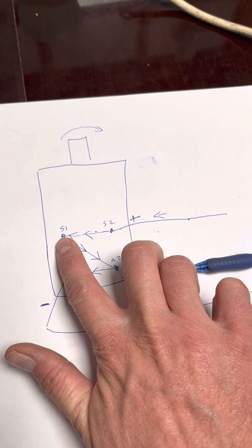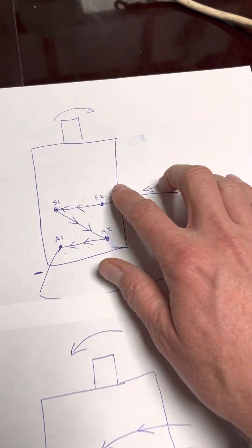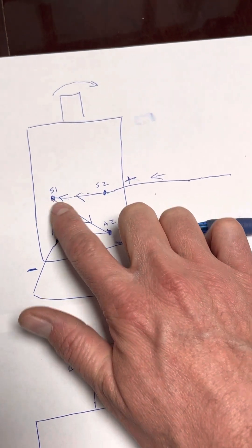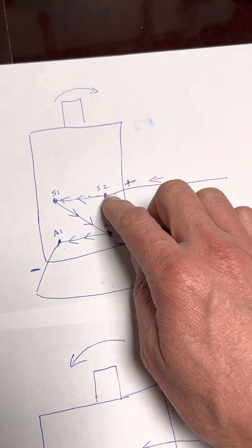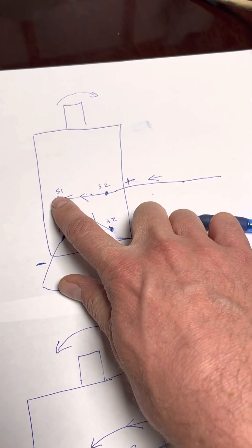So that causes it to spin a certain way. Now, if we switch the way that this is wired up, and instead of jumping it from S1 to A2, we jump it from S2 to A2, and then we run our main positive over here.